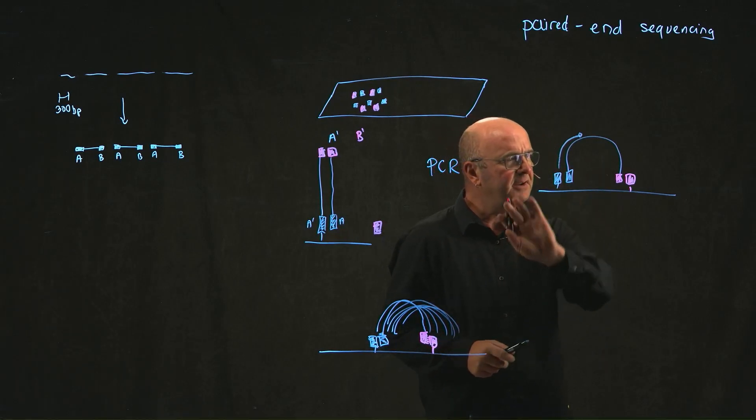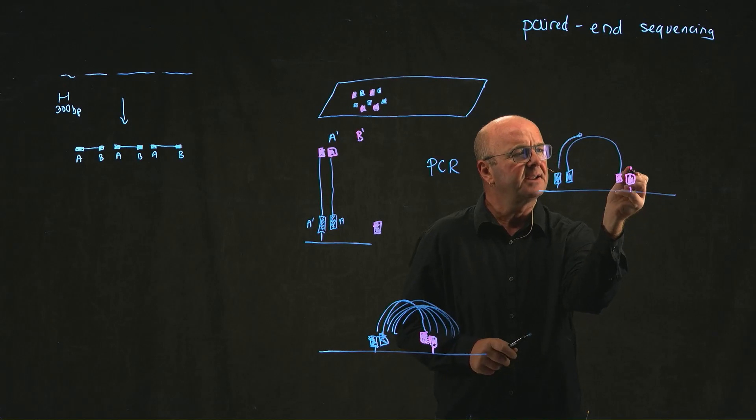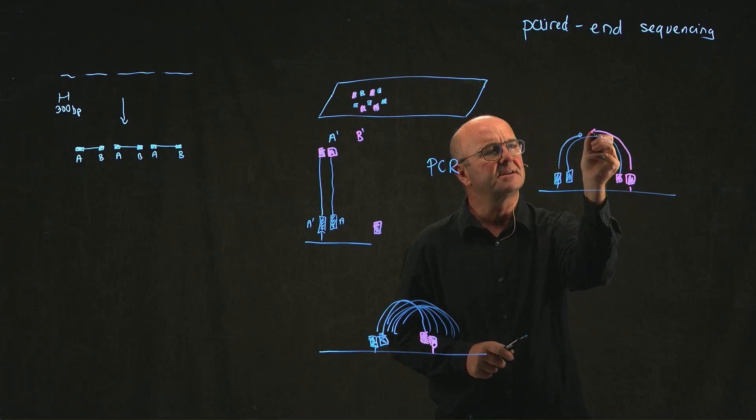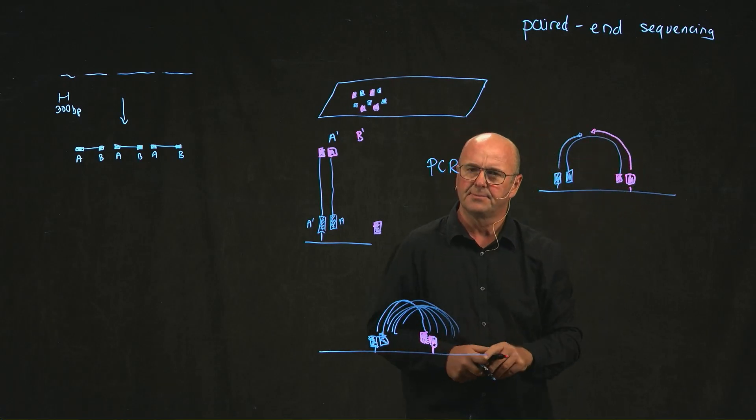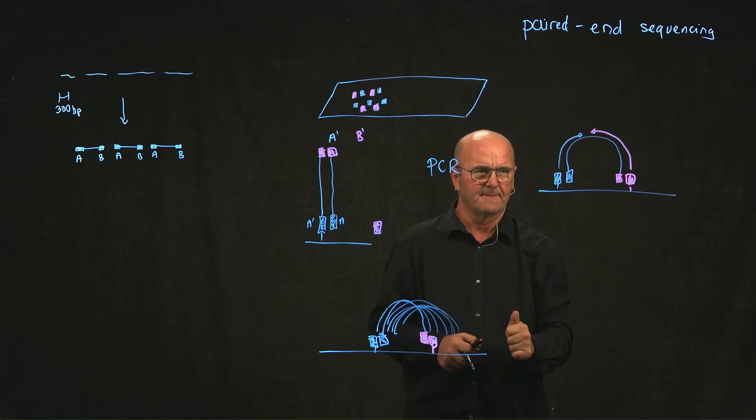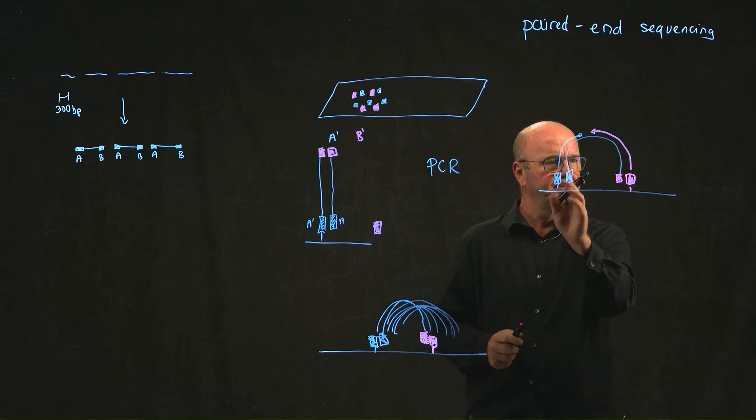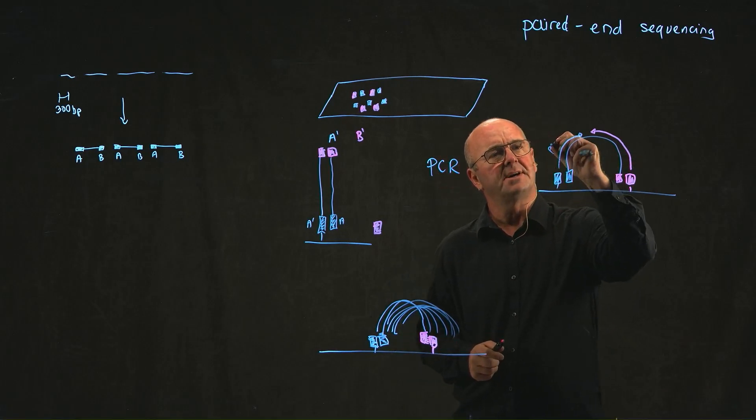And then once we've done that, if we wash everything away and start again, we can sequence at this end coming in this direction. So this is how we've got our two ends. So this is often called pass one.